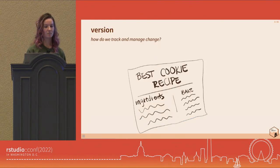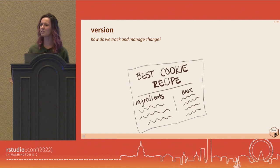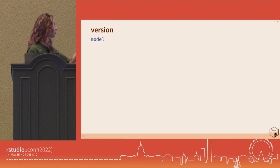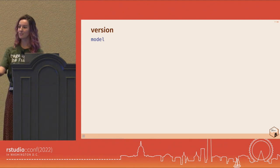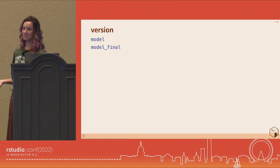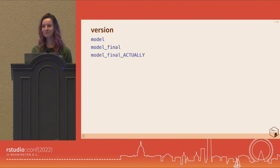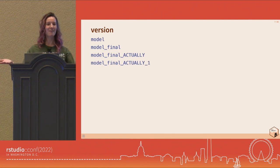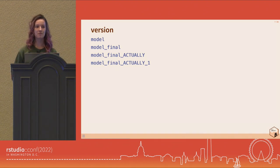We'll start with versioning — how do we track and manage change? When I bake, I might try out a new recipe, like throwing in some gluten-free flour, and I'll write down my changes so I can reproduce it later. In the data science world, you save a model, do your training and tuning, and end up with a final model. Then you get new data or realize you did something wrong, so you have a new final model — and then an actual final model. This lacks context and isn't scalable; it gets crazy for even one model, let alone 5, 10, or 100.